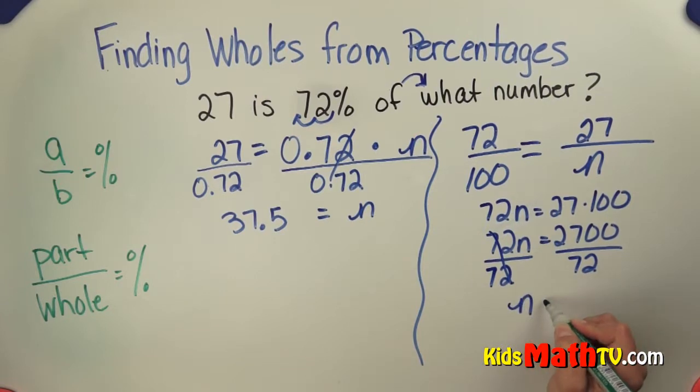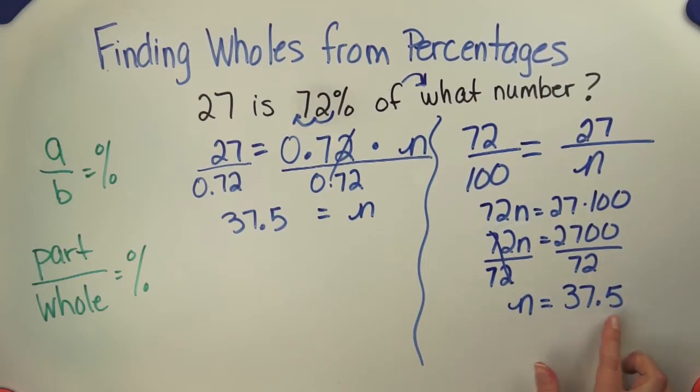That cancels, and N equals 37.5. When we divide 2700 by 72, you get 37.5. And that's the end of our lesson on finding wholes from percentages.